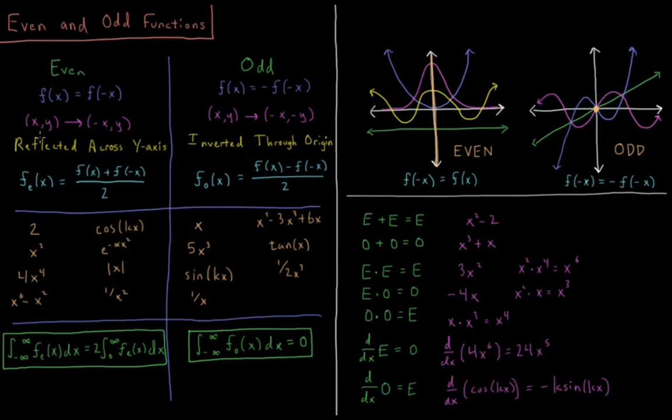So the even function has a symmetry where you can reflect it across the y-axis. Imagine this y-axis here being a mirror. These functions look the same on both sides of the y-axis, on both sides of the mirror.